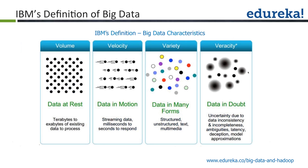Coming to the formal definition of big data, IBM has defined big data based on four parameters. The first is Volume — meaning the data is huge, not just in GBs or MBs, but in terabytes, petabytes, and exabytes of data. That is one of the parameters for qualifying some data as big data.